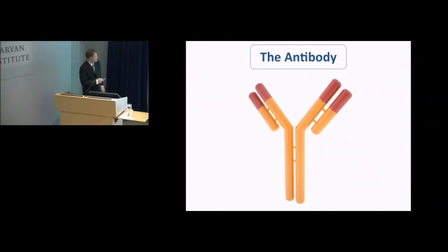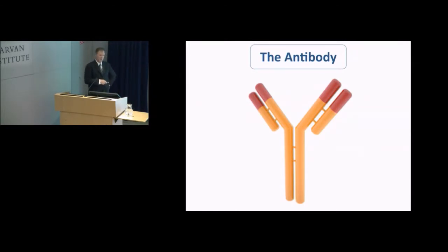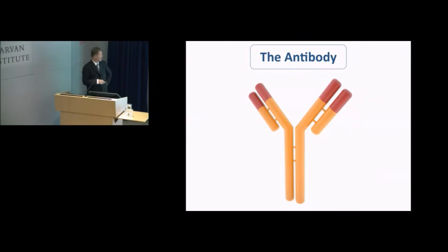The antibody — you've probably all heard about this. This is the famous Y-shaped structure of the antibody which was defined in the 60s, and a couple of guys won a Nobel Prize for it. There's been quite a few Nobel Prizes around antibodies — their discovery and their use in various ways. It's one of the major tools in the biopharmaceutical industry, and of course very important for protecting us from infection.